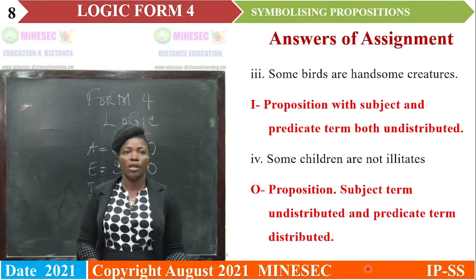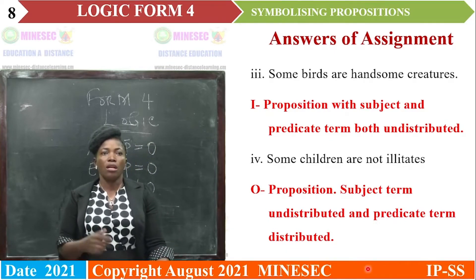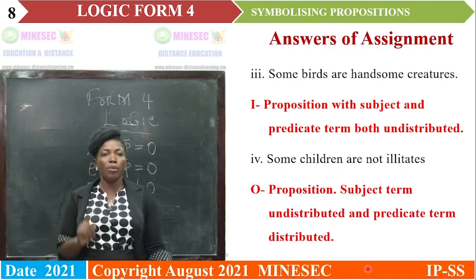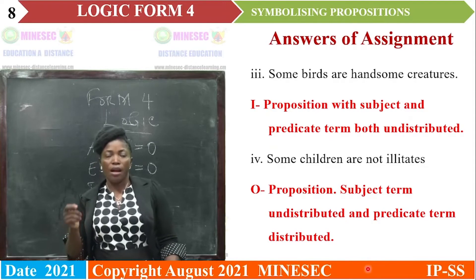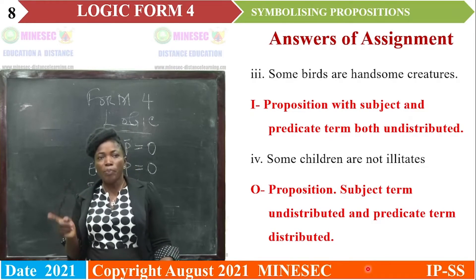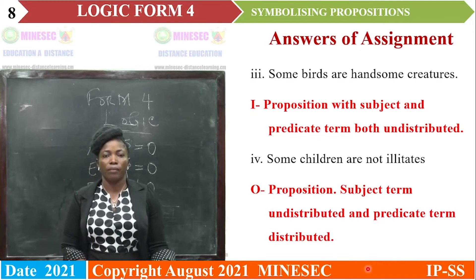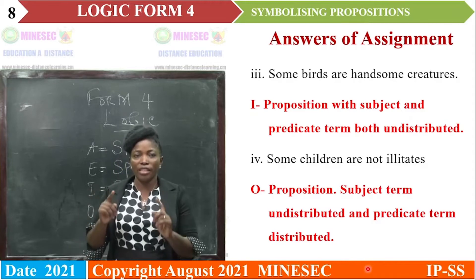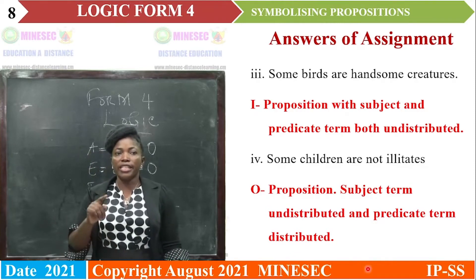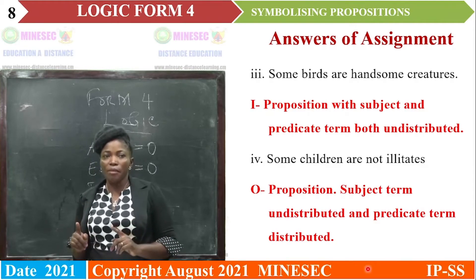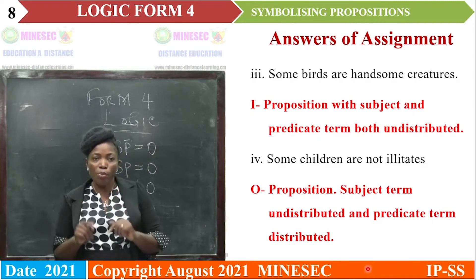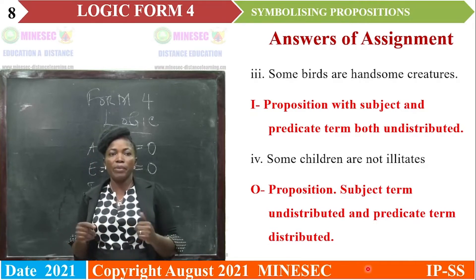Number 3: 'Some birds are handsome creatures.' This is an I proposition, with both the subject and the predicate term undistributed. Number 4: 'Some children are not illiterate.' This is an O proposition, and the subject term is undistributed while the predicate term is distributed.